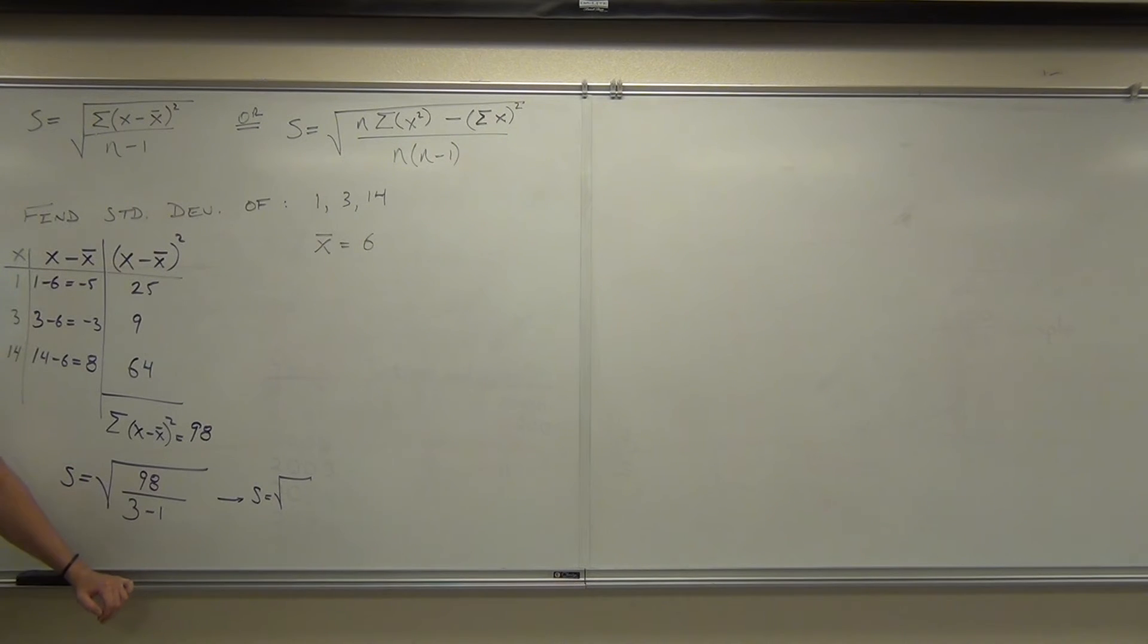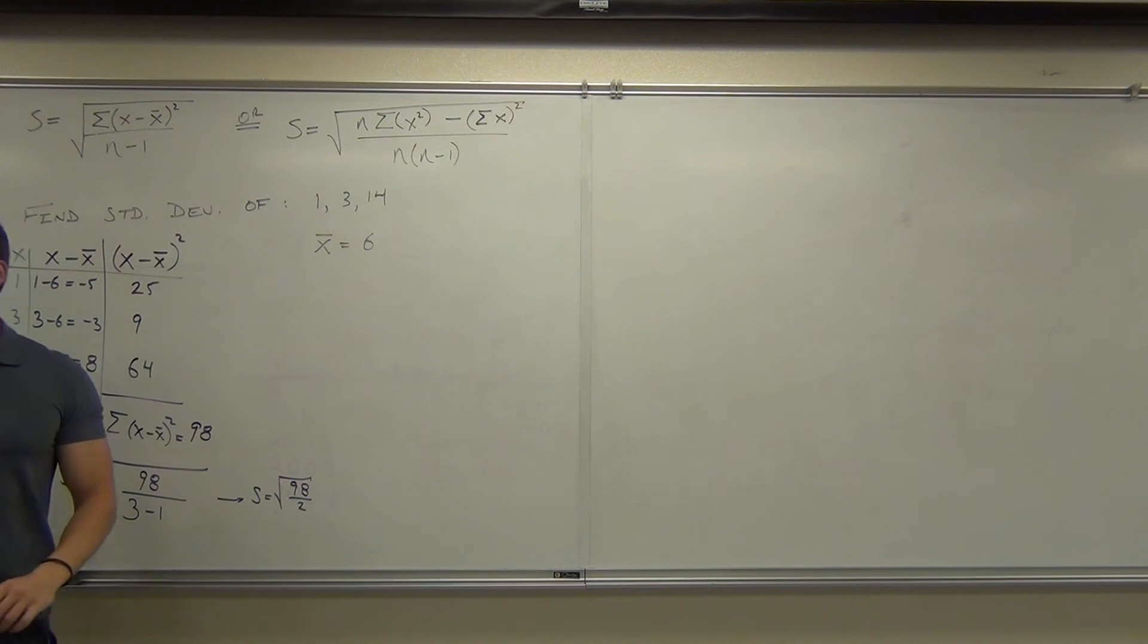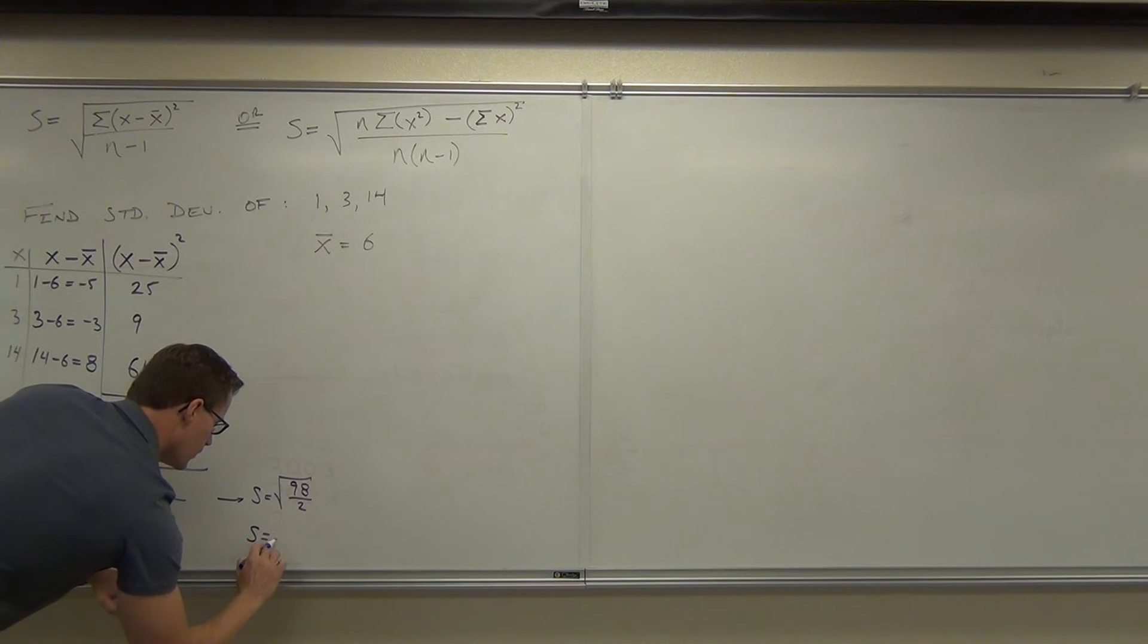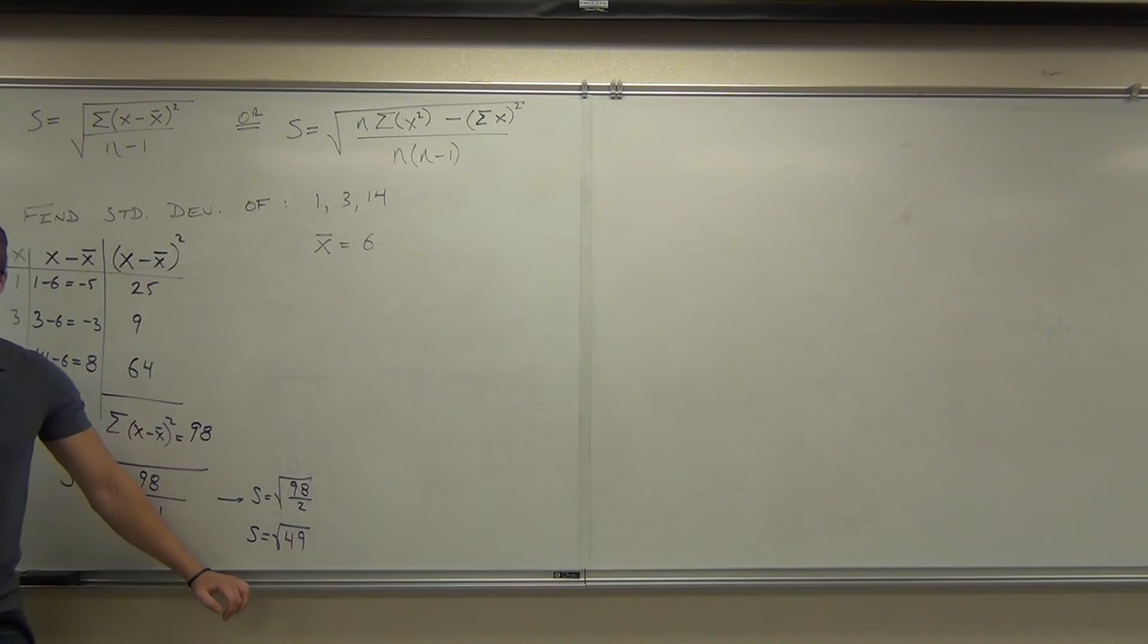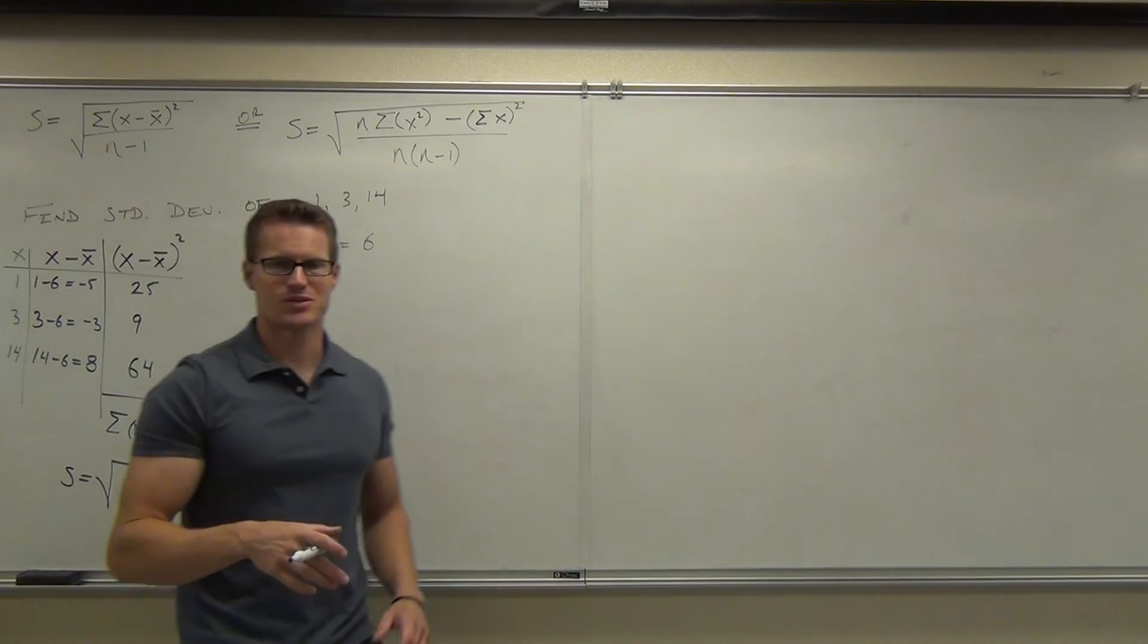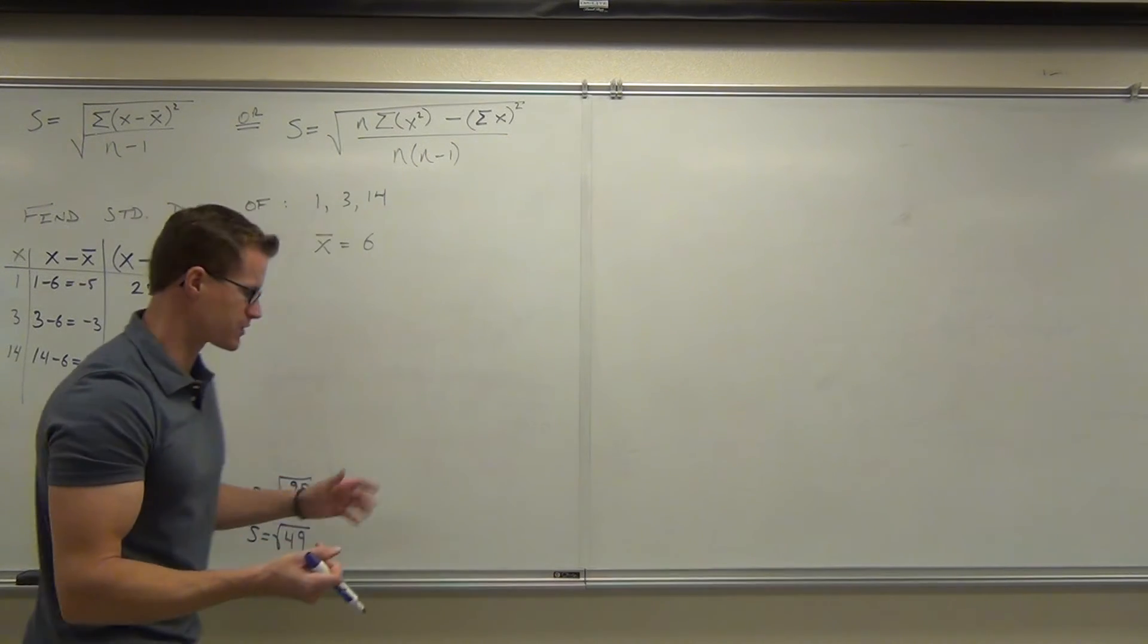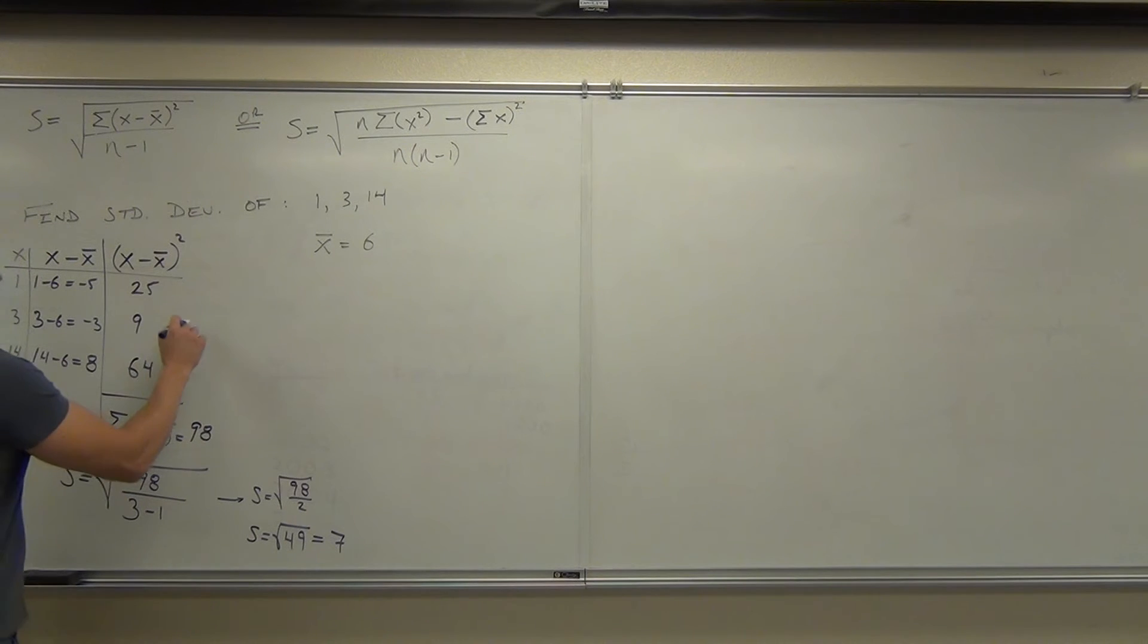So s equals, that's the standard deviation for a sample, the square root of 98 over 2. What's 98 over 2? 49. Square root of 49. What's the square root of 49? Nice. Don't forget to take that square root. Now, this is kind of rare. Honestly, standard deviation is most oftentimes a decimal. It's rarely a whole number. In this case, it happens to be a whole number. That's kind of nice for us. So what we got out of here is that the standard deviation is 7.